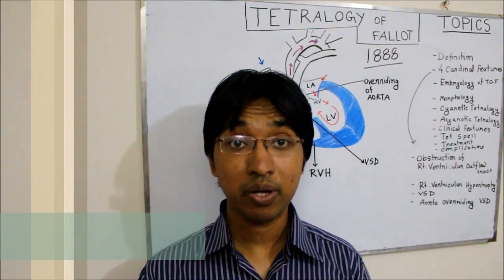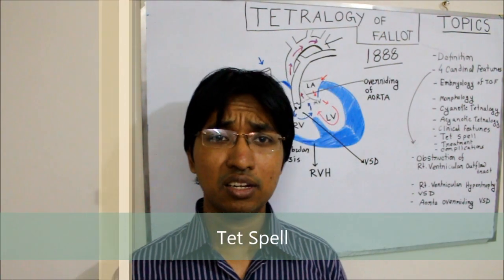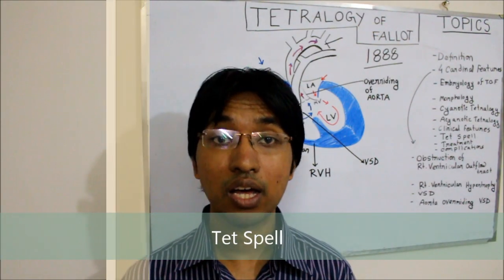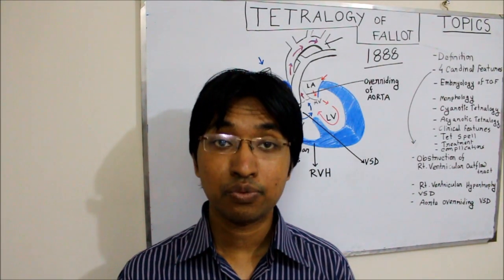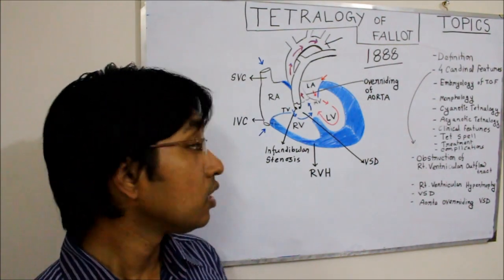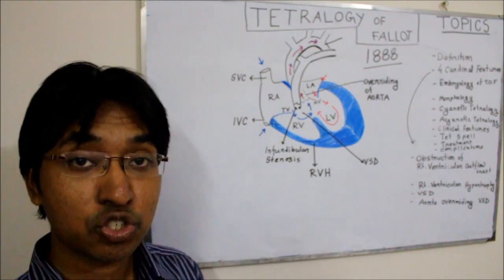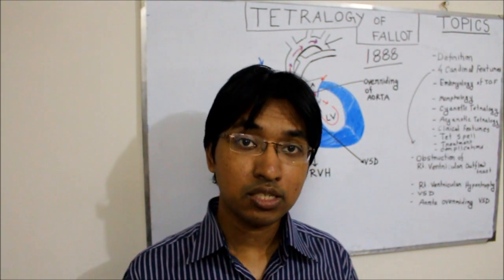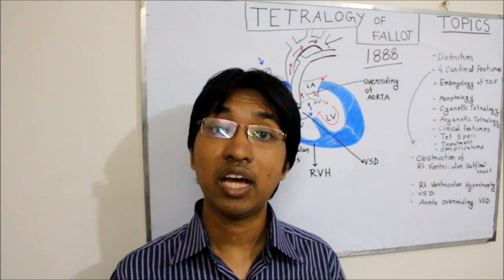The tet spell is a very high-yield topic for examinations. Its exact mechanism is still uncertain, but it is presumed to result from a transient increase in the resistance of blood flow to the lungs. As resistance increases, more blood flows to the left ventricle via the right-to-left shunt, causing increased cyanosis. These babies may sometimes faint—also known as syncope—and syncope can result in brain damage due to hypoxia.